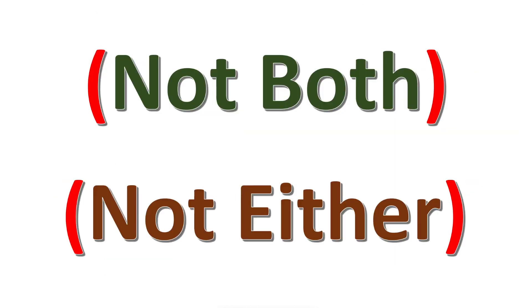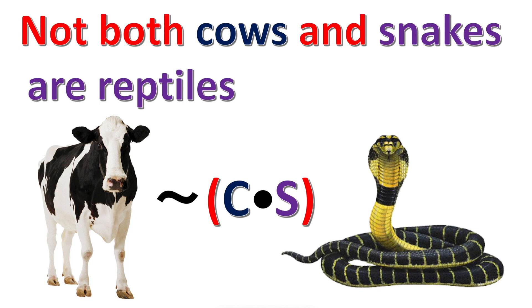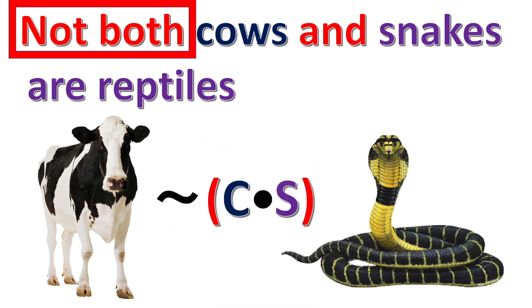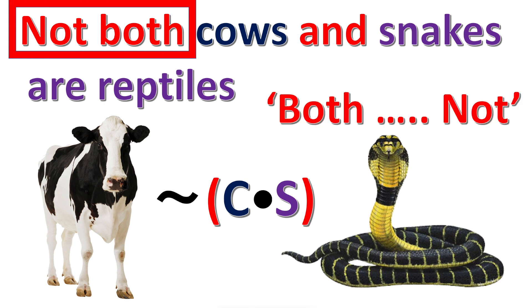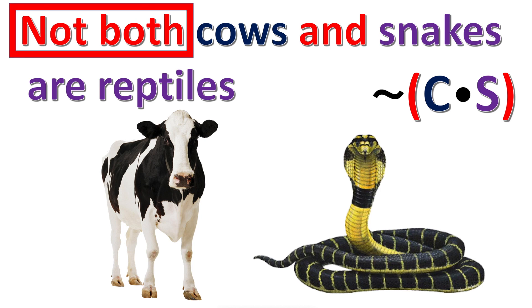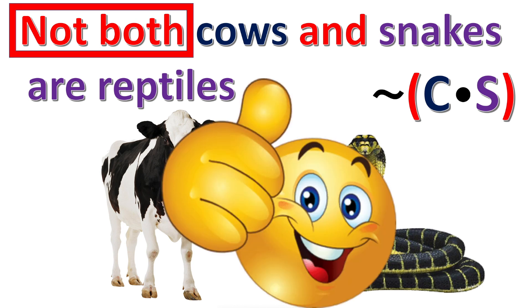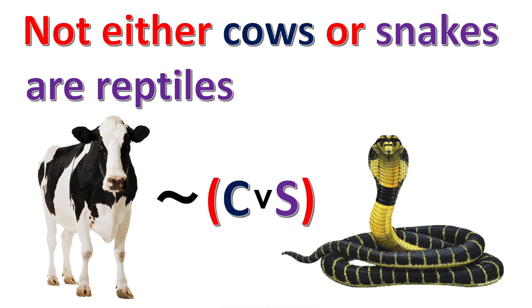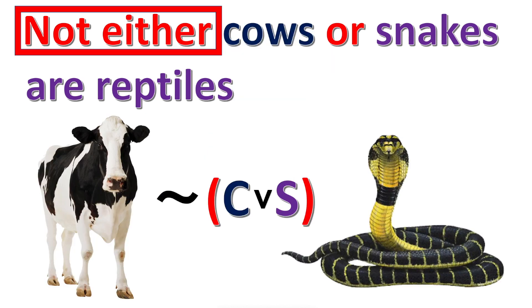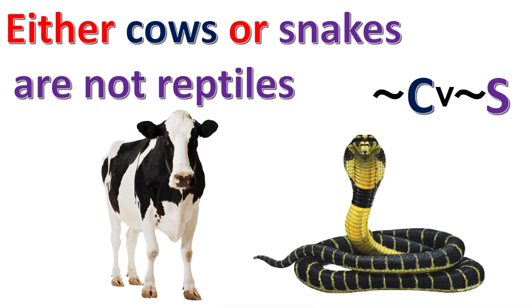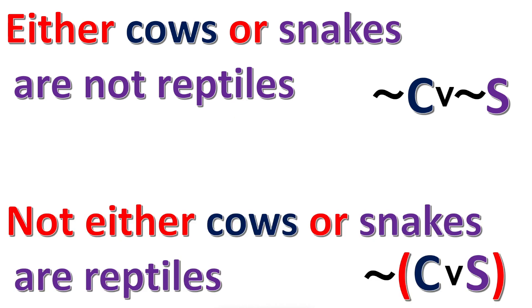How do you express the words 'not both' and 'not either' with parentheses? An important thing to know is that the words 'not both' is not logically equivalent to the words 'both not.' For example, this statement says 'not both' — it's true. But this statement that says 'both not' is false. And likewise, the words 'not either' is not logically equivalent to the words 'either not.' For example, this statement is true, but this statement is false.